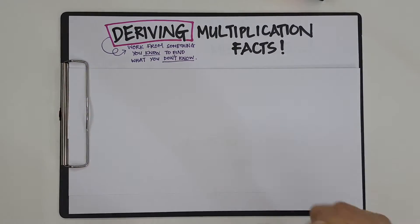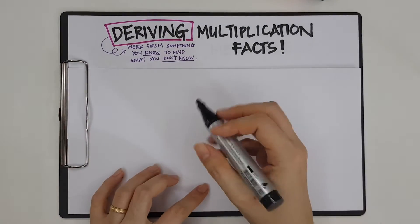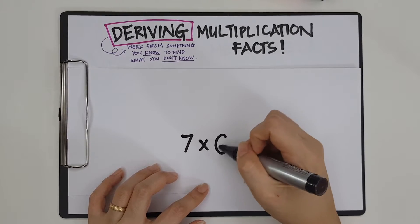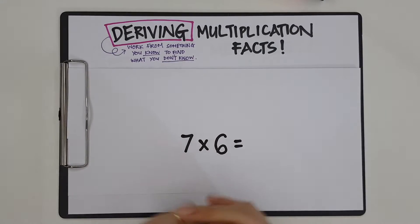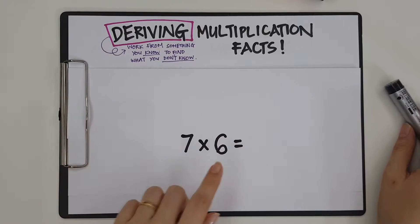Well, the multiplication fact that I had trouble with in the past would be 7 times 6. Why? Because I hated skip counting in 7 and skip counting in 6 is not exactly easy.